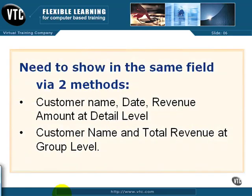The problem goes like this. You need to show the same field via two methods. The customer name, date, revenue amount at the detail level, all in one single field, as well as the customer name and total revenue amount at the group level, also in one single field.